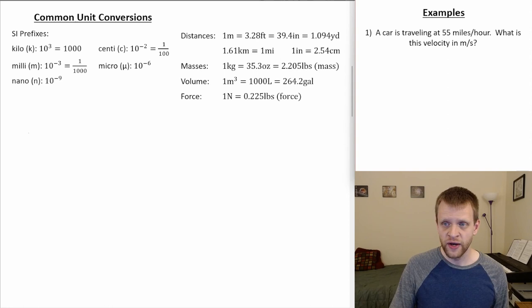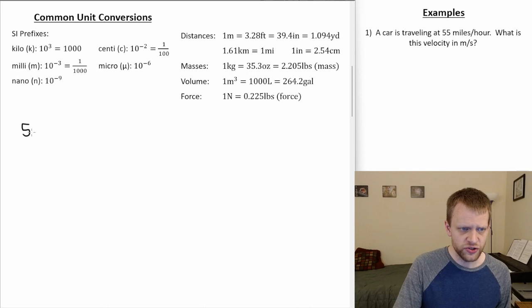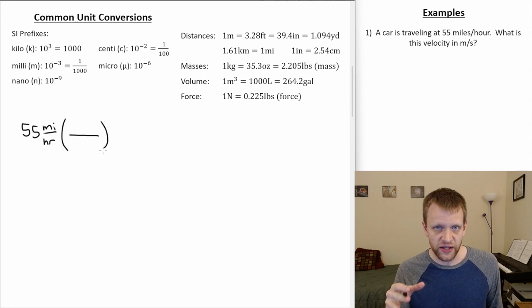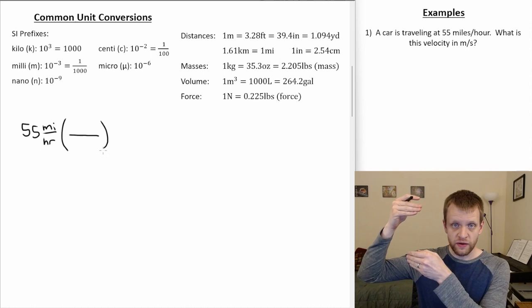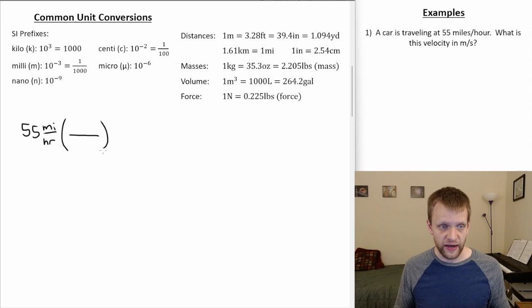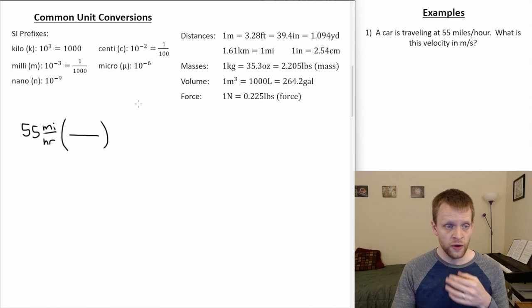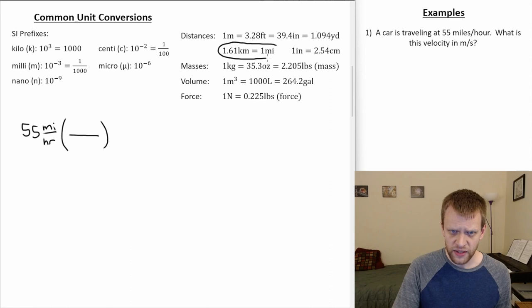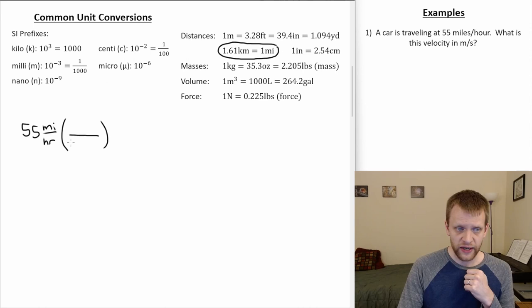Let's say a car is traveling at 55 miles per hour, and we want to convert that to meters per second. We're going to need multiple conversion factors. We always set this up so that the units we're trying to get rid of show up in both the numerator and denominator. Let's start by converting miles to kilometers: we know 1 mile equals 1.61 kilometers. Since miles is in the numerator, we put 1 mile in the denominator to cancel it, so 1 mile equals 1.61 kilometers. The miles now cancel out, and if we stopped here we'd have kilometers per hour.